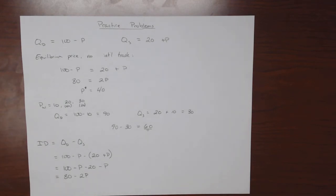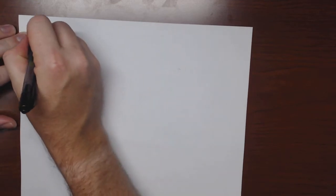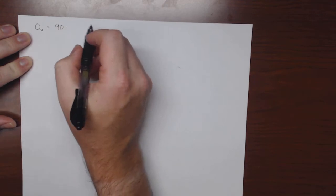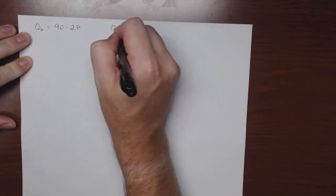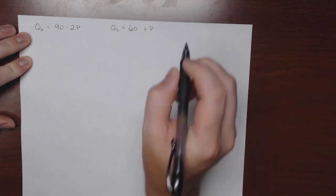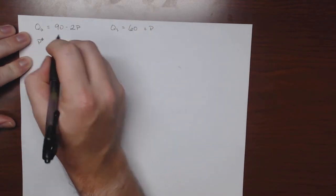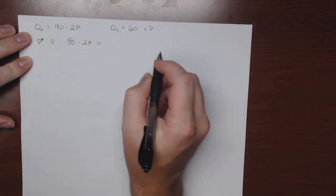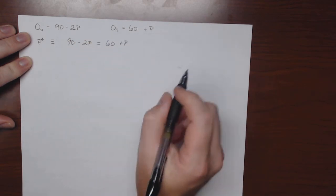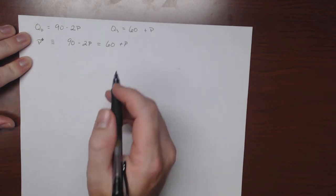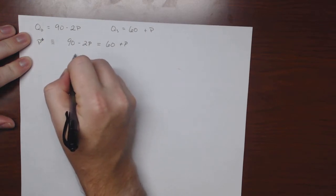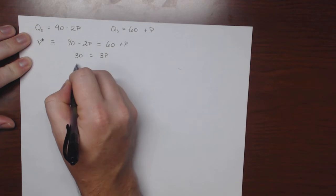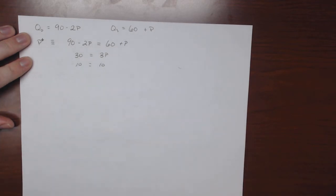Now let's do a foreign market. This foreign market's quantity demanded is equal to 90 minus 2p, and their quantity supplied is equal to 60 plus p. Their equilibrium price with no international trade: set 90 minus 2p equal to 60 plus p, subtract 60 and add 2p to both sides, and that gives 30 equals 3p, so p-star equals 10.